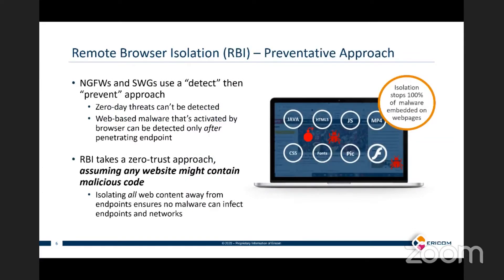Remote browser isolation is what we'll be talking about today. It's really a preventative, zero trust approach to web security. When you look at next-gen firewalls, secure web gateways, and many other security tools, a lot of them have to detect — they scan or analyze content using signatures or other methods to determine if it's malicious. We don't do any detection. What we do is assume everything is malicious and isolate it from the endpoints.